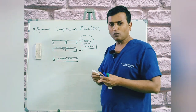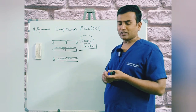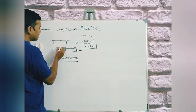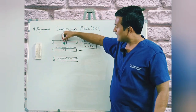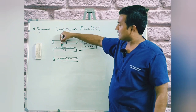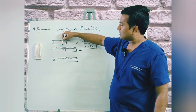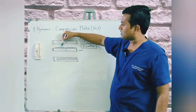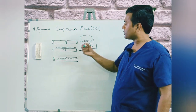If we need more compression, we fix another eccentric screw on the same side. But before fixing the second eccentric screw, we must unthread the first eccentric screw, then fix the second, and then re-fix the first. The second eccentric screw gives 1 mm compression and the first gives another 1 mm, so together we get 2 mm of compression.